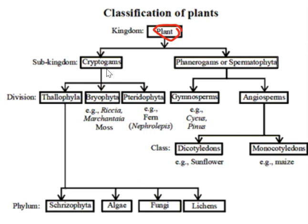The sub-kingdom Cryptogames, or non-flowering plants, are further divided into three main divisions. These divisions are Thallophyta, Bryophyta, and Pteridophyta.